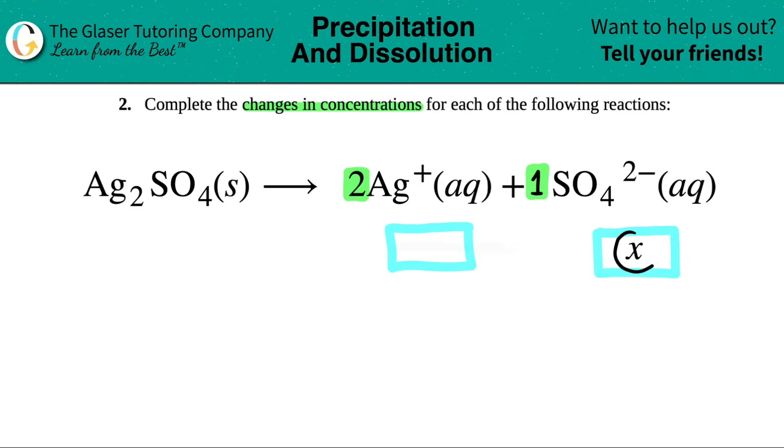Now this is why they only labeled this as X, because you would just stick the coefficient right in front of the X value. But remember, one X is the same thing as just saying X. So we don't really have to include the ones.